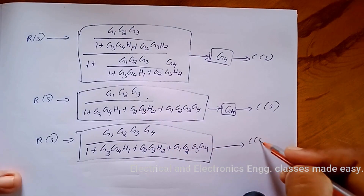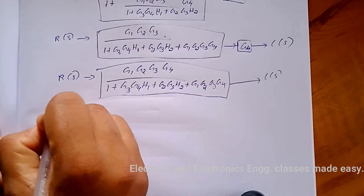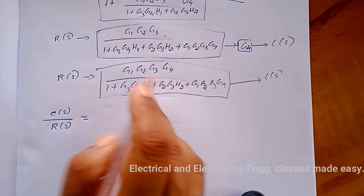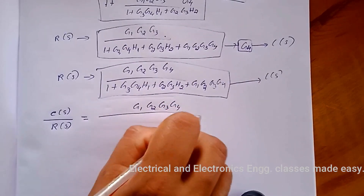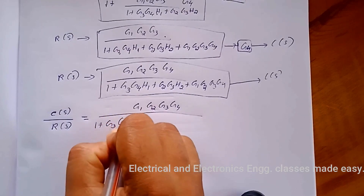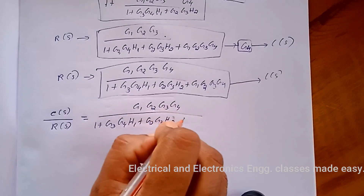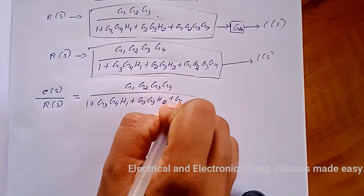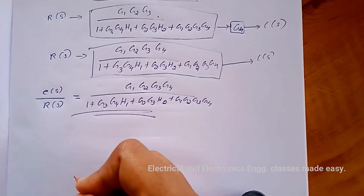So, C(s) divided by R(s) equals the transfer function: G1·G2·G3·G4 divided by (1 + G3·G4·H1 + G2·G3·H2 + G1·G2·G3·G4). This is the overall transfer function of the given block diagram.